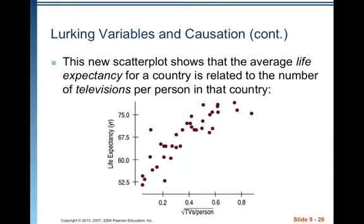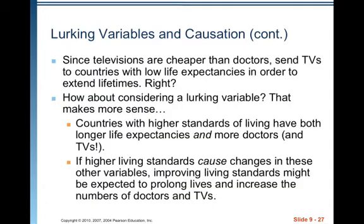Okay, if you do the same thing, if you do square root of TVs per person, you can see the same thing. This new scatter plot shows that the average life expectancy for a country is related to the number of televisions per person in that country. Well, TVs are cheaper than doctors, so should we send TVs to countries with low life expectancies in order to extend lifetimes? No.